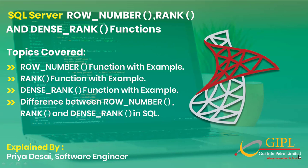Today, we will understand the ROW_NUMBER function with some examples and what is the use of this function. Then we will see the RANK function with some examples. Then we will see the DENSE_RANK function with some examples. Then we will discuss the difference between ROW_NUMBER, RANK, and DENSE_RANK functions in SQL Server.